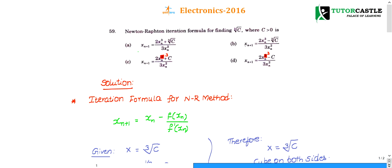Question number 59: Newton-Raphson iteration formula for finding the cubed root of C, where C is greater than 0.